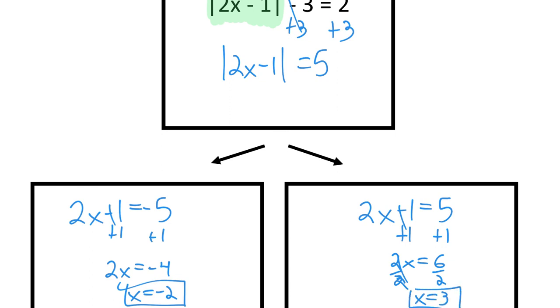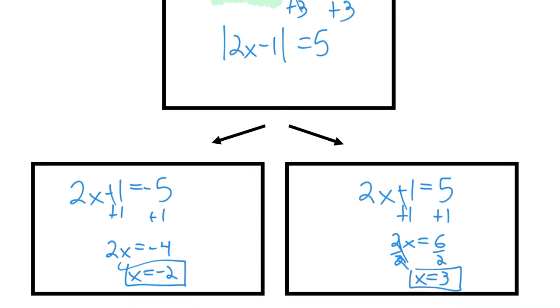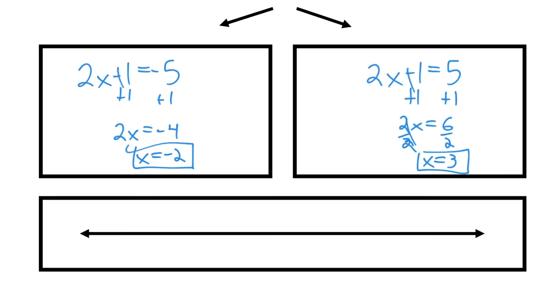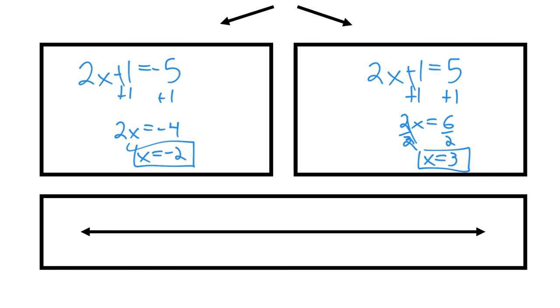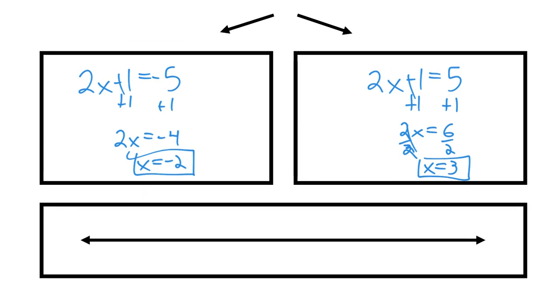So we're still solving, we're still isolating a variable. But it's understanding with absolute value, for the equations we're doing, you need to set your two equations up and solve each of them individually. So my solutions for this equation are negative 2, positive 3.